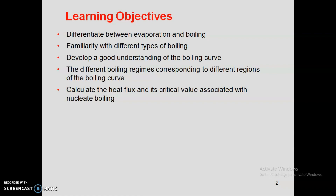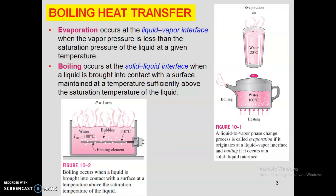First we discuss evaporation and boiling and the difference between the two. Evaporation occurs at the liquid-vapor interface when the vapor pressure is less than the saturation pressure of a liquid at a given temperature. For example, water at 20 degrees centigrade situated in the atmosphere — the evaporation occurs at the liquid-vapor interface at 20°C, even though at atmospheric pressure the saturation temperature is 100°C.